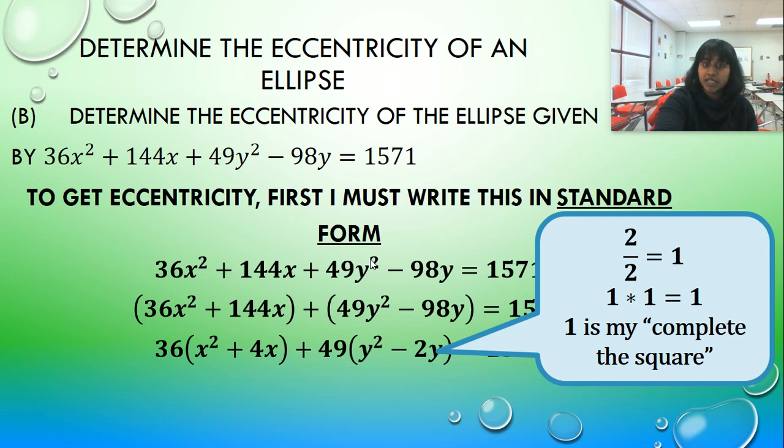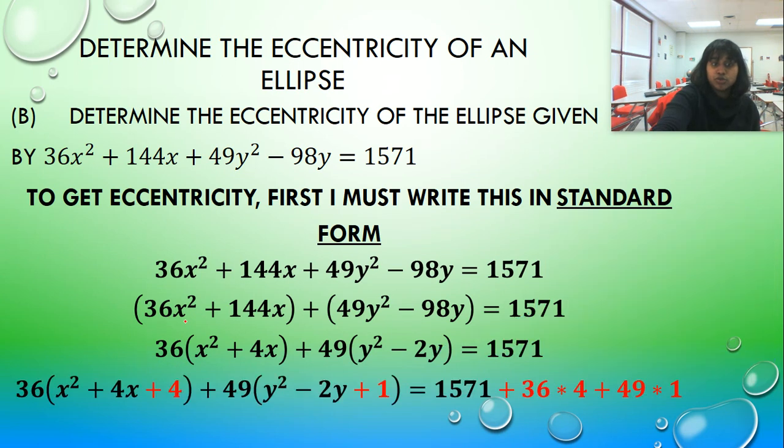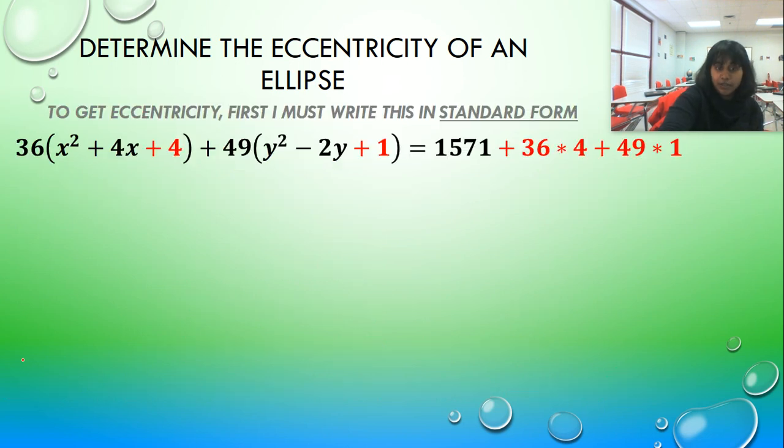So now we have completed our perfect square here. But anything we add to the left-hand side must be added to the right-hand side, including the factor we drew out. So if I'm adding four on the left, I'm not. I'm actually adding 36 times four. If I'm adding one on the left, I'm not. I'm actually adding 49 times one. Do not forget what you factored out.